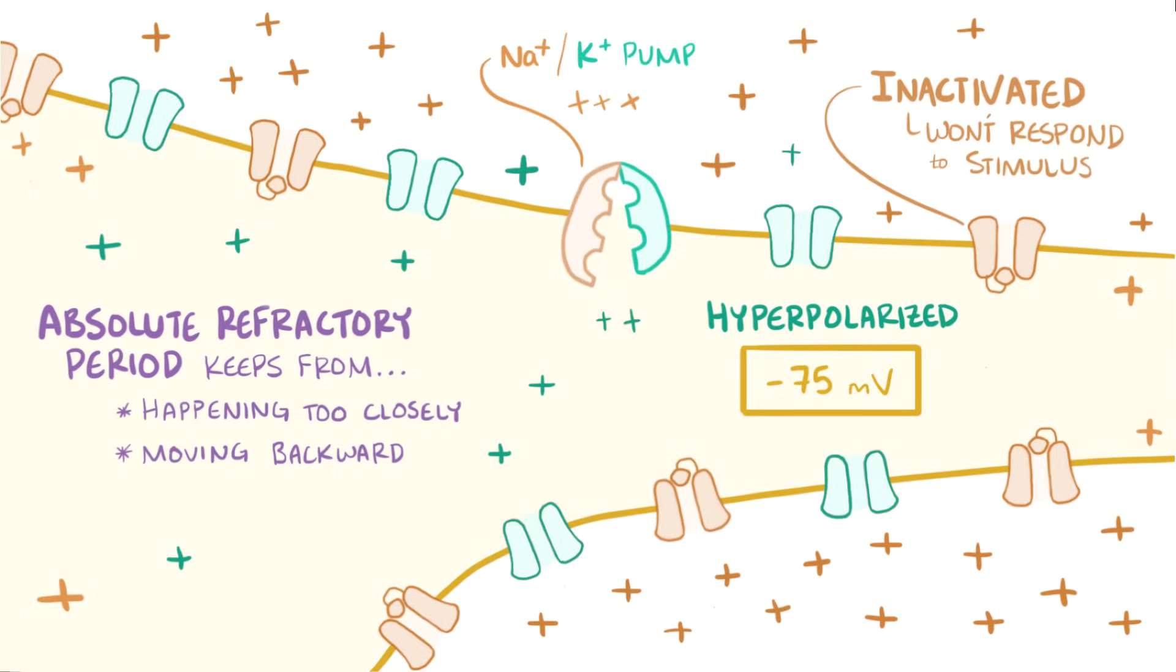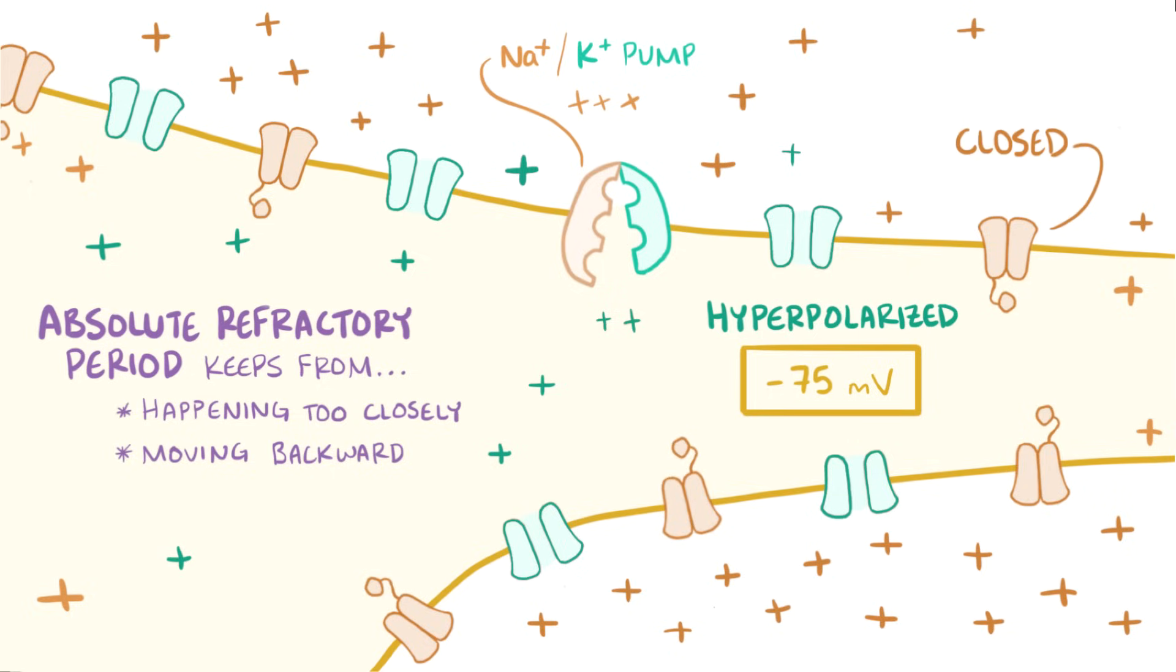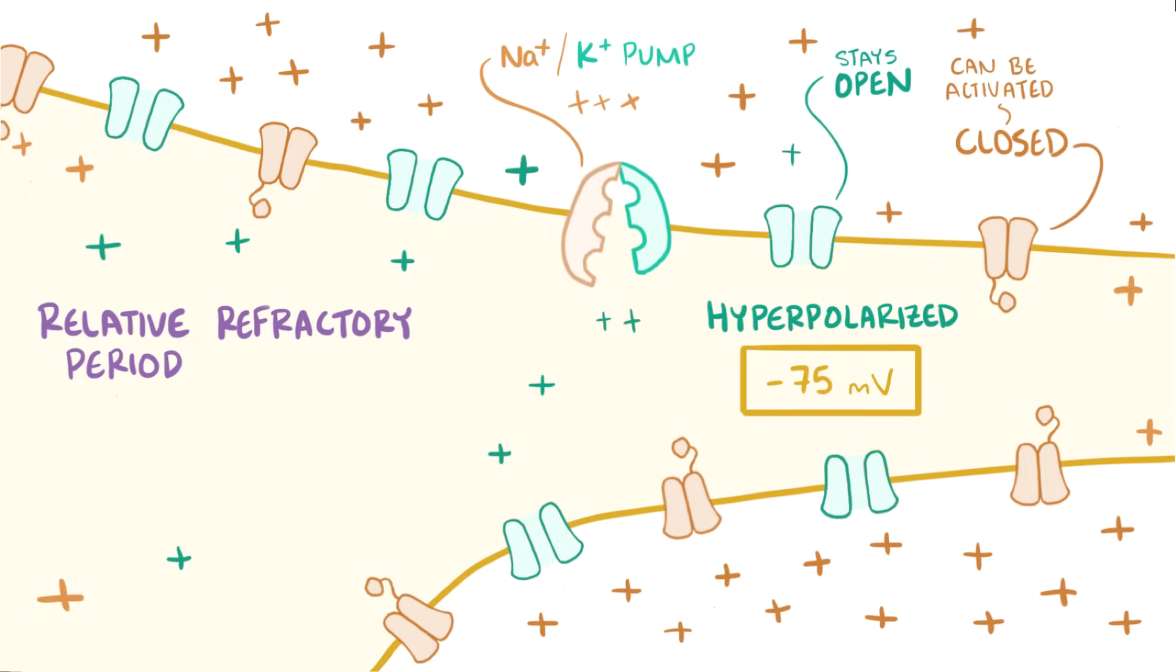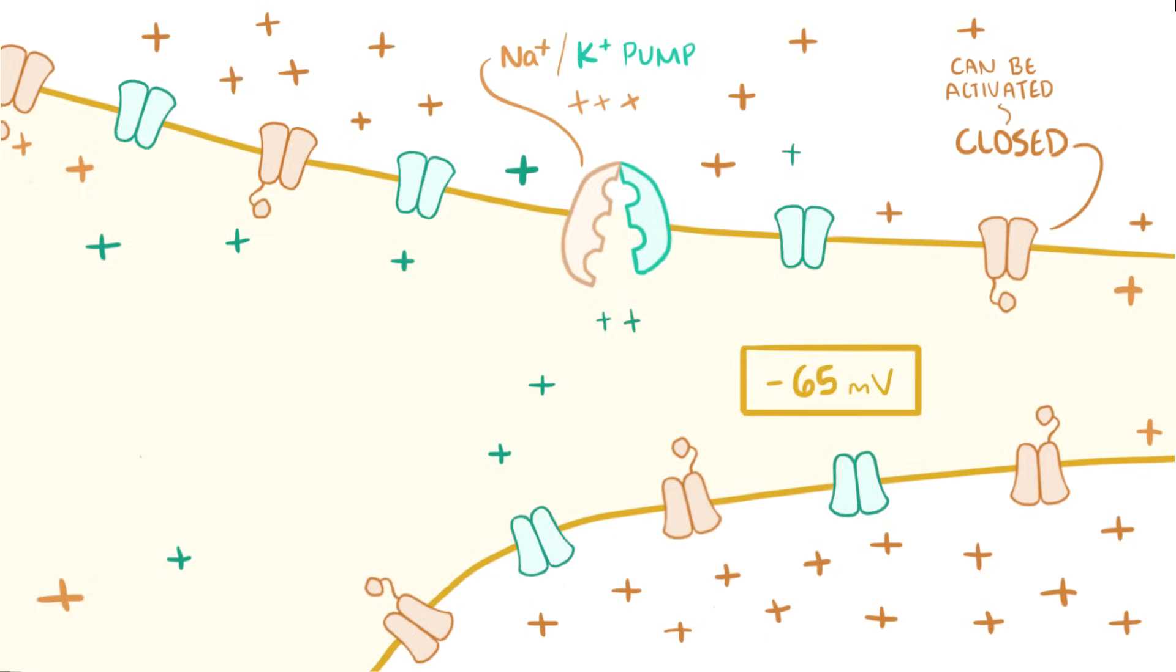During this time, the sodium channels go back to their initial closed state, and for a short period the potassium channels stay open. At this point we're in the relative refractory period, since the sodium channels are closed but they can be activated, although because the potassium channels are still open and we're in a hyperpolarized state, it takes a stronger stimulus to do so. Finally, as the potassium channels close, the neuron returns to its resting membrane potential.